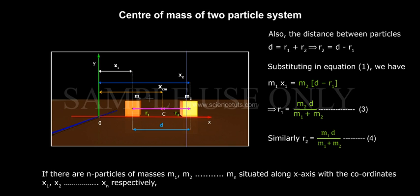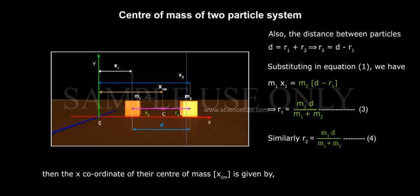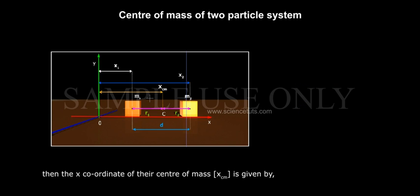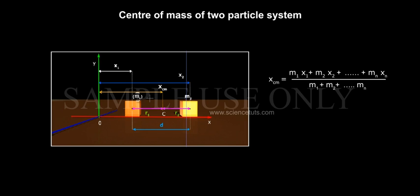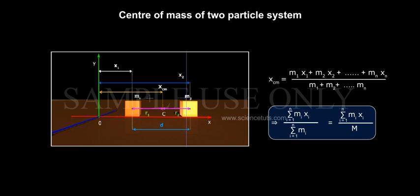If there are n particles of masses M1, M2, so on Mn, situated along X-axis at coordinates X1, X2, so on Xn respectively, then the X coordinate of the centre of mass Xcm is given by Xcm equals (M1 X1 plus M2 X2 plus so on Mn Xn) divided by (M1 plus M2 plus so on Mn). That implies Sigma i equals 1 to N (Mi Xi) by Sigma i equals 1 to N (Mi), which equals Sigma i equals 1 to N (Mi Xi) by M, when Sigma i equals 1 to N (Mi) equals M, the total mass of the system.